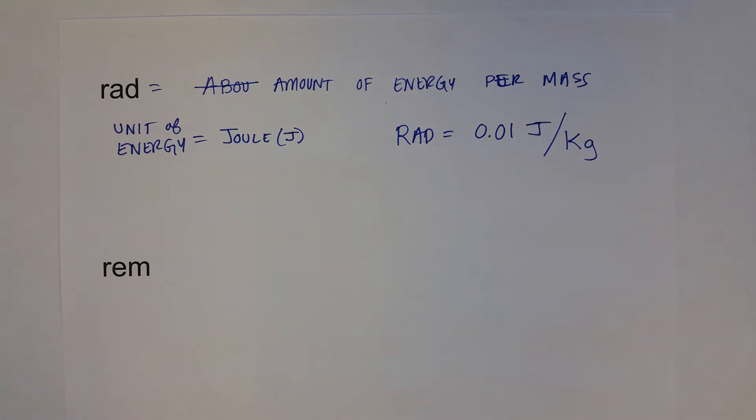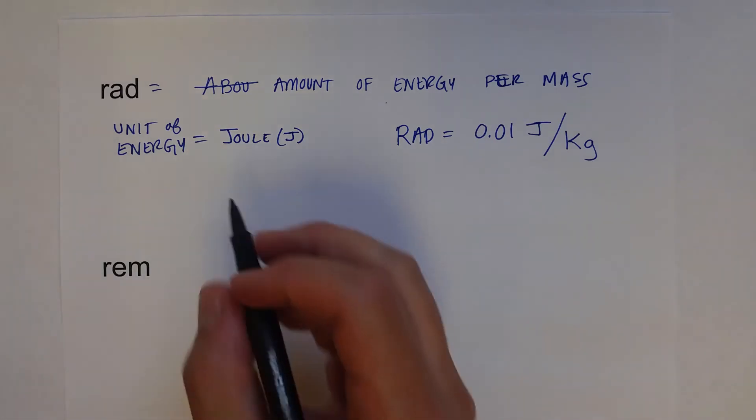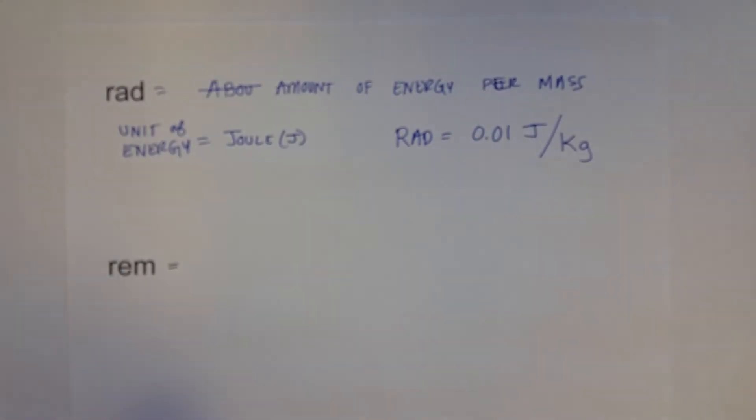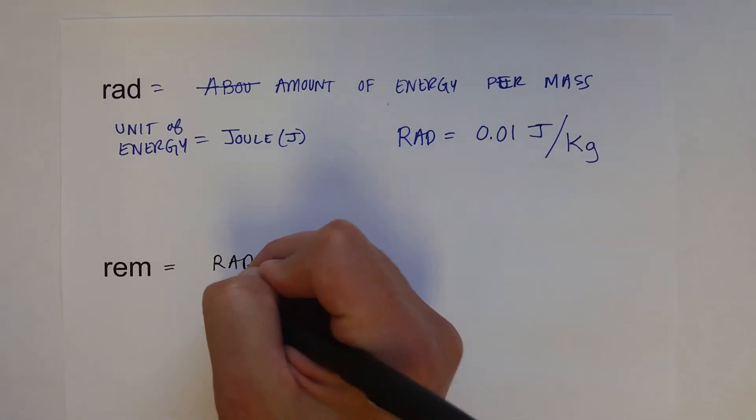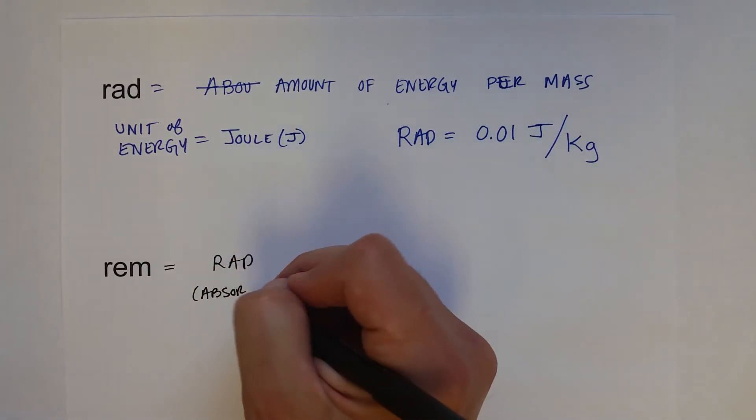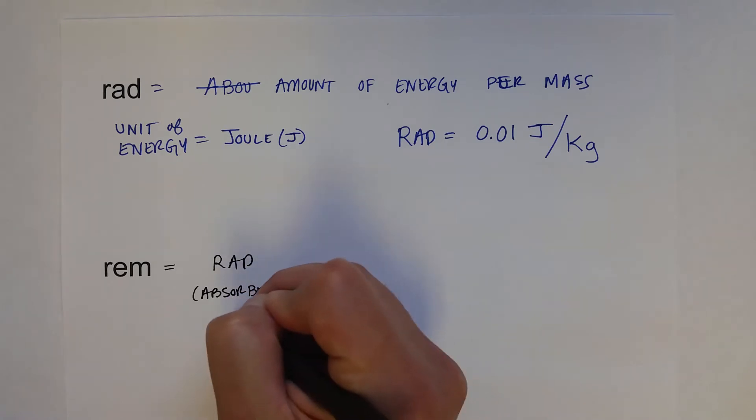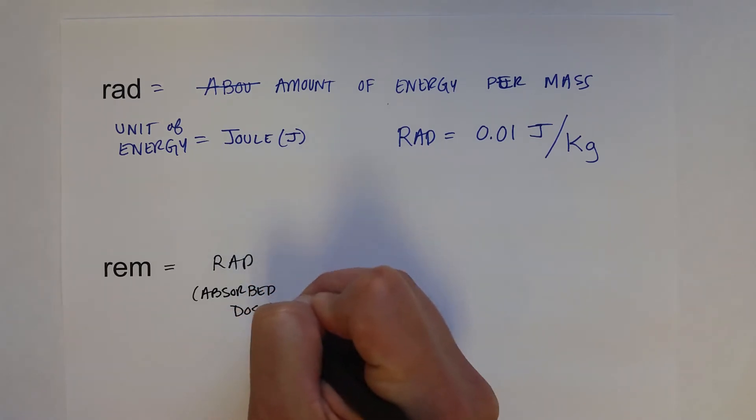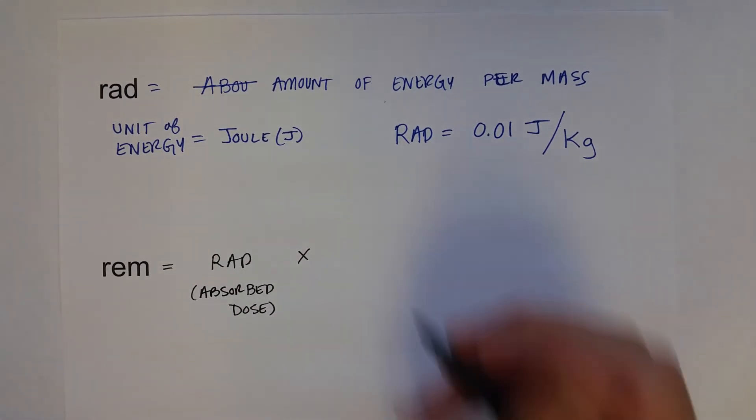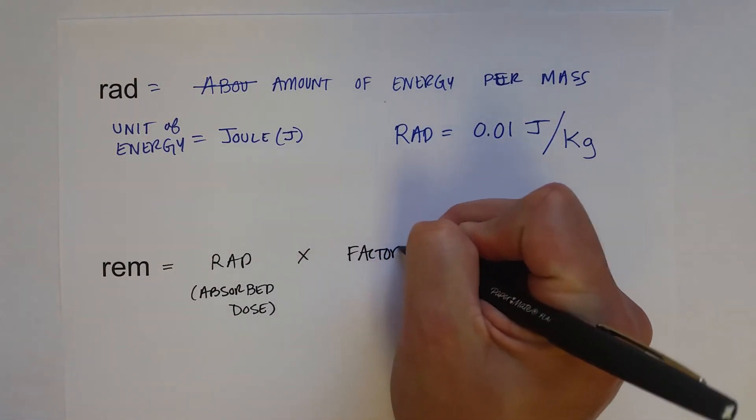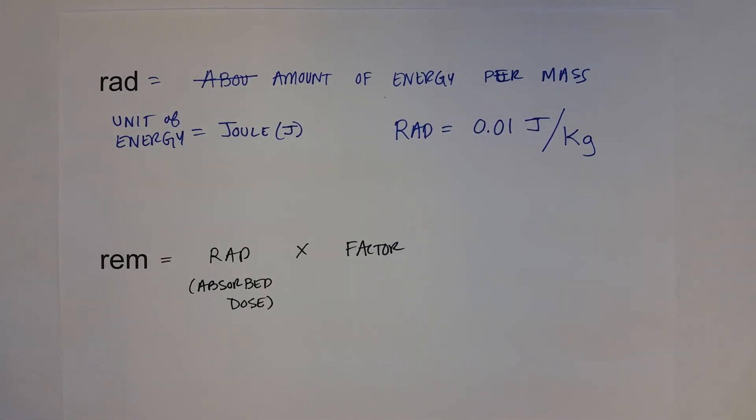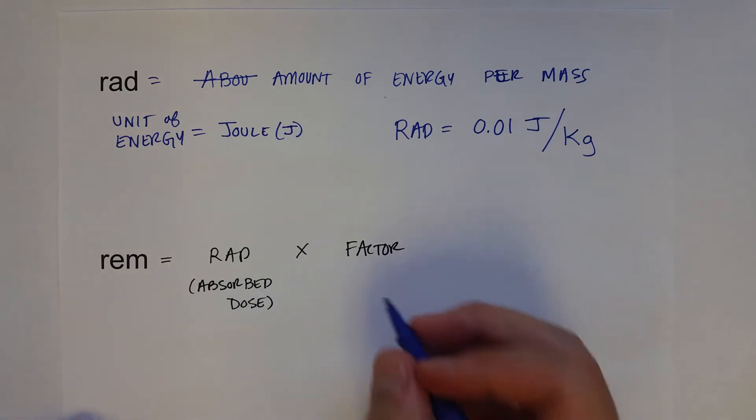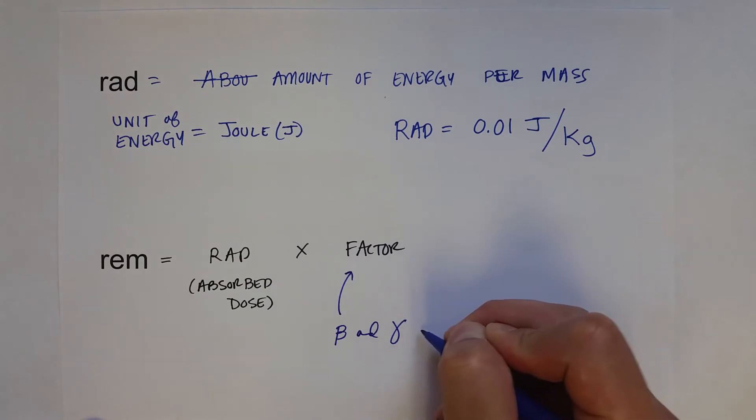So the REM, or the roentgen equivalent man, is essentially a calculation using the rad. So it's the amount of rad, which you can assume is the absorbed dose - the amount of energy absorbed per unit mass - multiplied by a factor which is different for each type of radiation. Beta and gamma rays have a factor of 1.